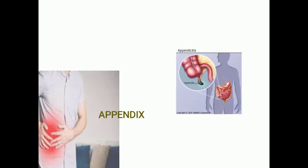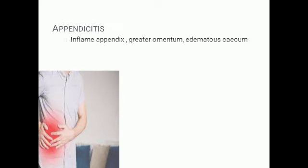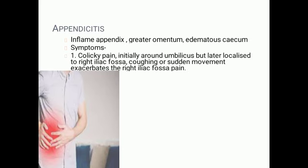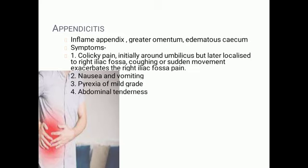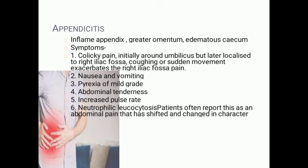Let us begin with the appendix. The pathological condition involving the appendix is appendicitis, which is the inflammation of the appendix, also involving the greater omentum and the cecum. The symptoms involve colicky pain initially around the umbilicus but later localized to the right iliac fossa, exacerbated on coughing and sudden movement. Nausea and vomiting, mild grade pyrexia, abdominal tenderness, increased pulse rate, and neutrophilic leukocytosis are also present.